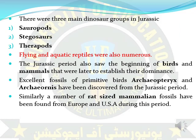In the Jurassic time period, three main groups of dinosaurs were present: number one sauropods, number two stegosaurs, number three theropods. It was also noticed that flying and aquatic reptiles were numerous on the earth. There was a beginning of the evolution of birds and mammals. Earlier birds such as Archaeopteryx and Archaeornis were present, and rat-sized mammal fossils were recovered from the USA and Europe.